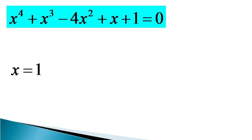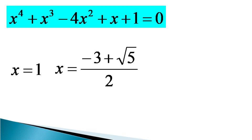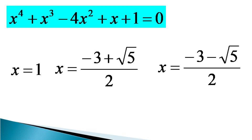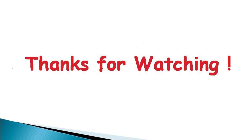So our given equation has three solutions: x equals 1, x equals (minus 3 plus root 5)/2, and x equals (minus 3 minus root 5)/2. Thanks for watching.